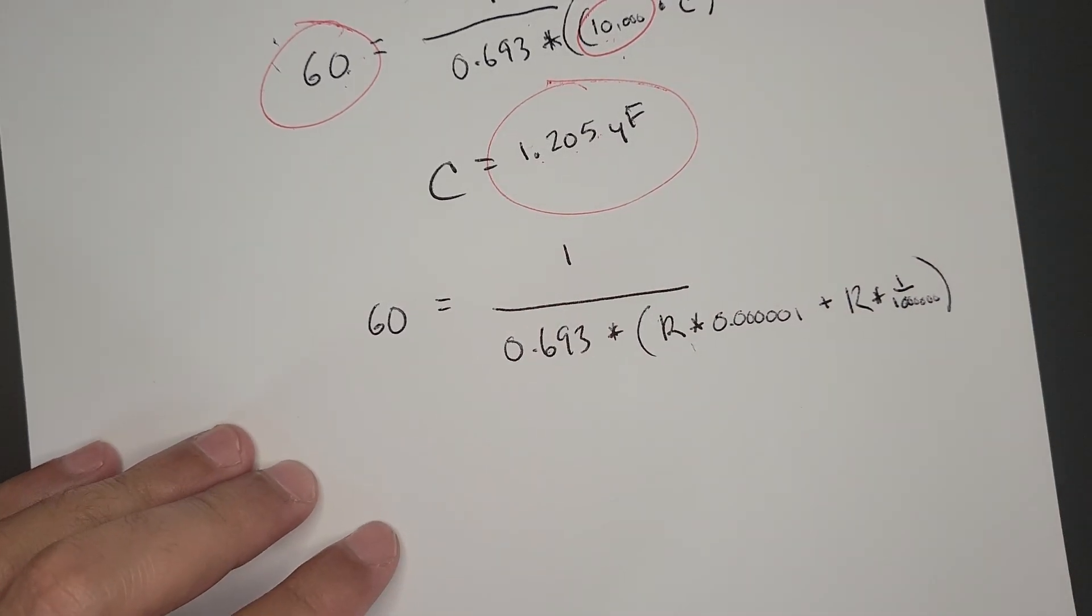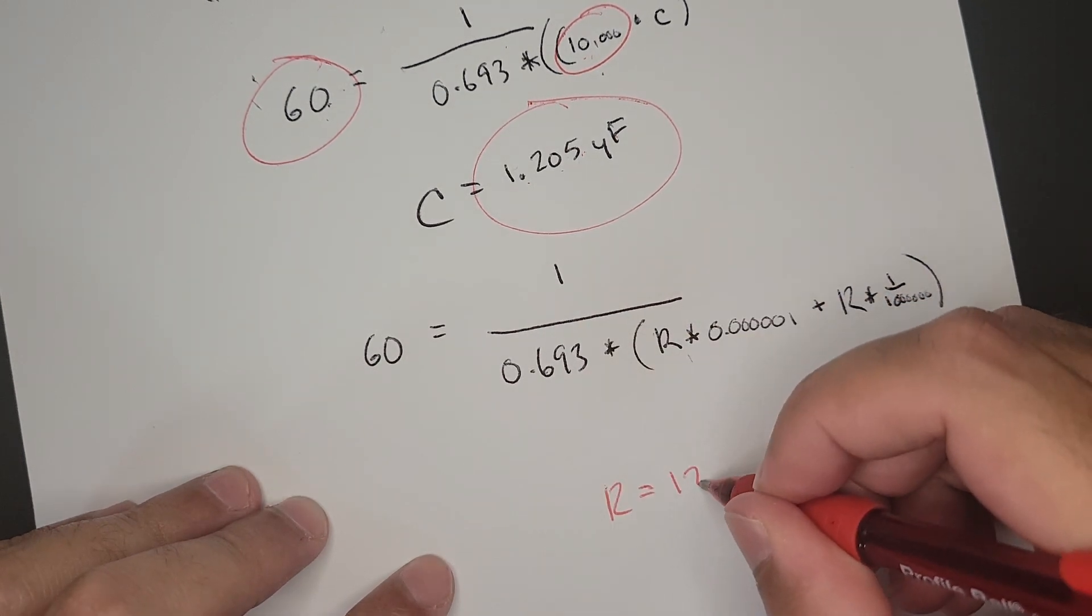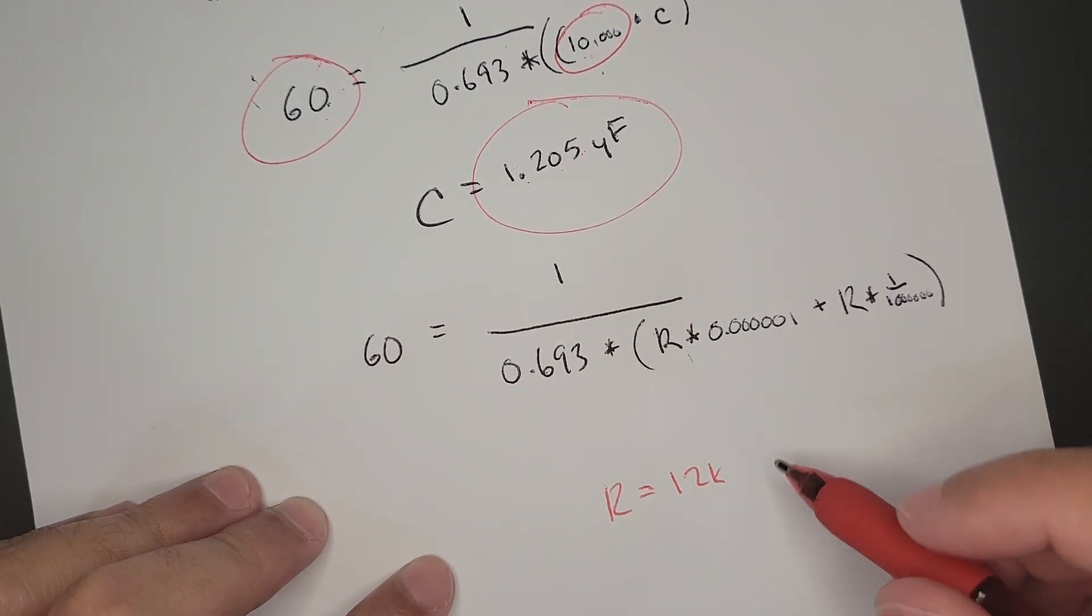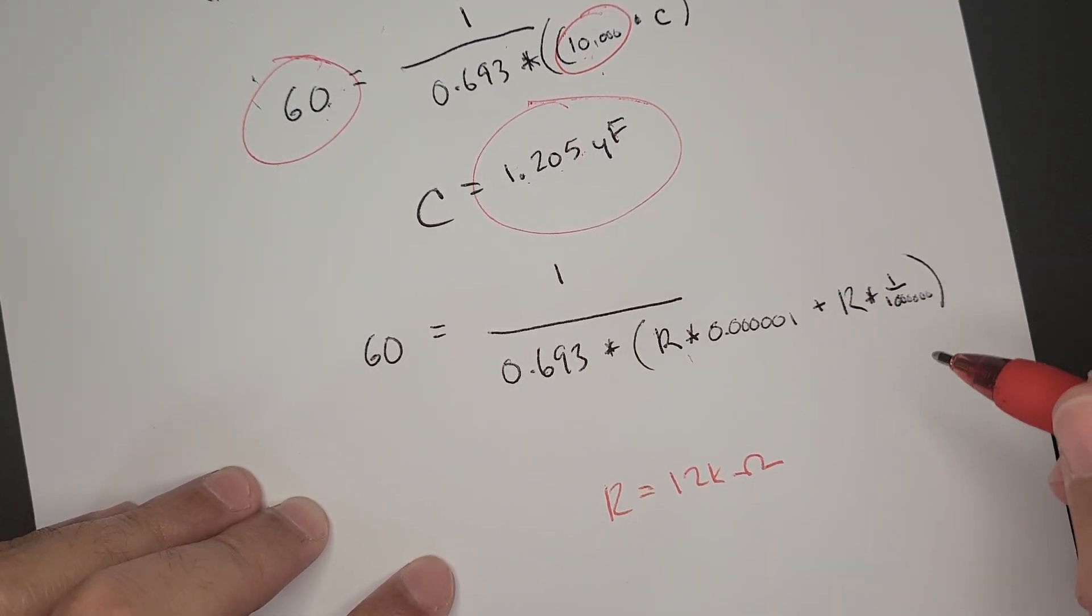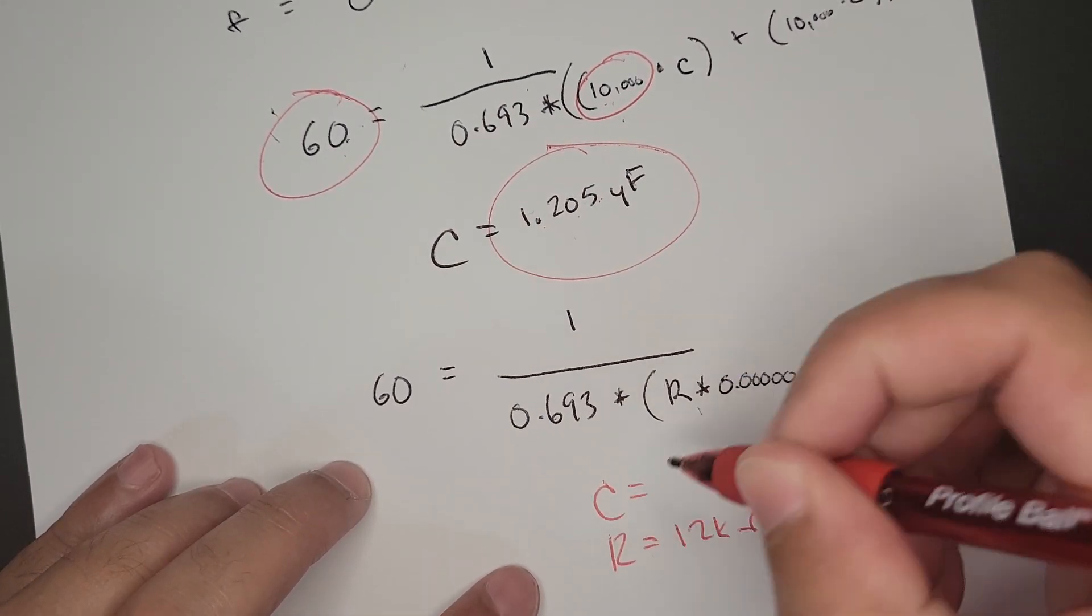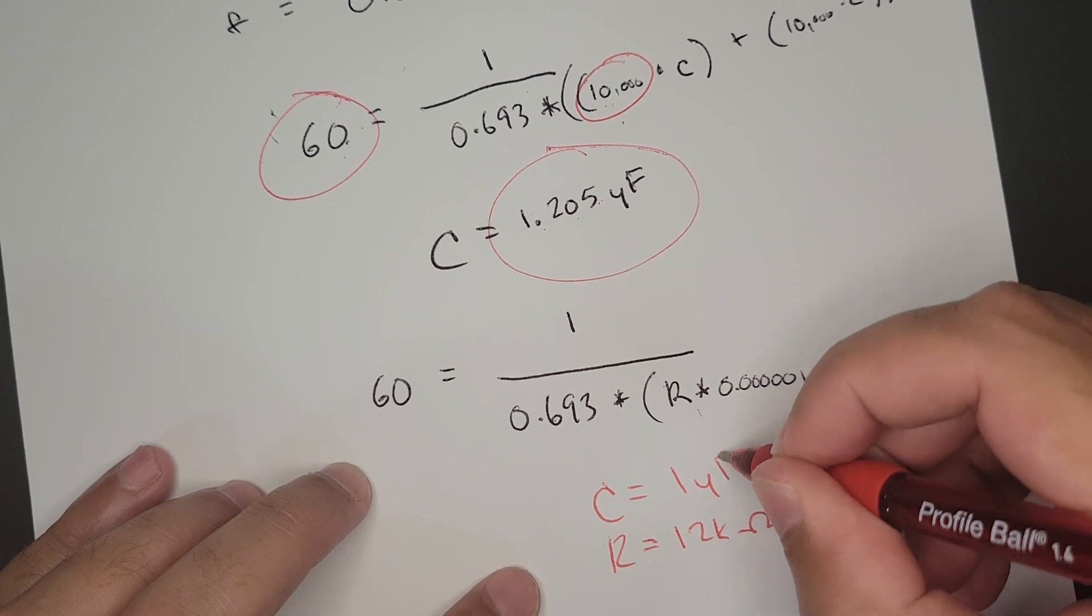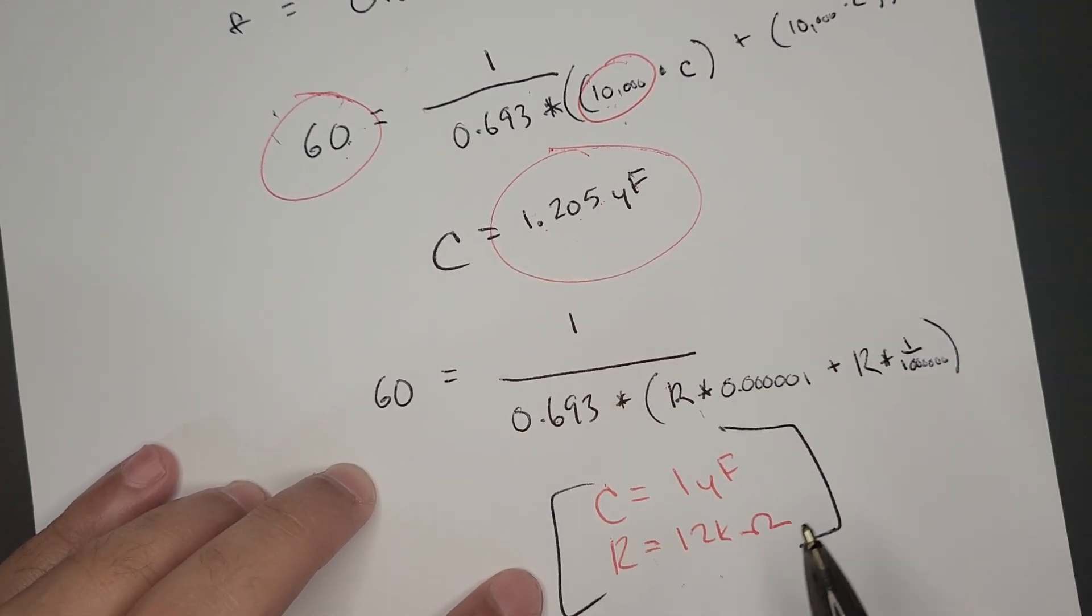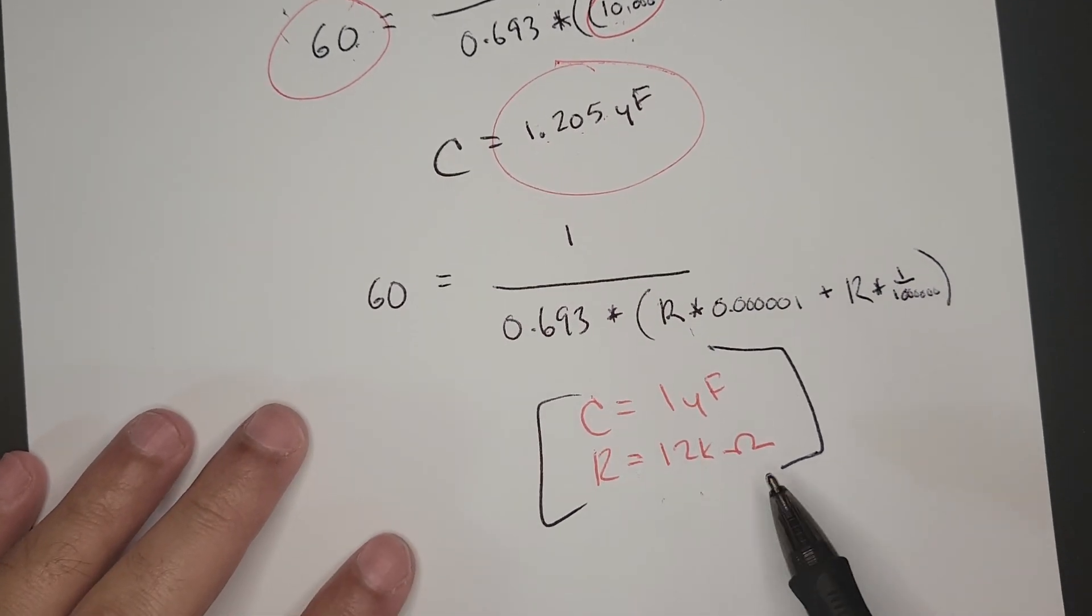Our resistance in this case is roughly 12k, so 12,000 ohms. This makes sense because we lowered our capacitance, so our resistor needs to be raised up a bit. We have our two values: one microfarad capacitor and our resistance. I think we should give this a shot and see if we can hit 60 hertz.